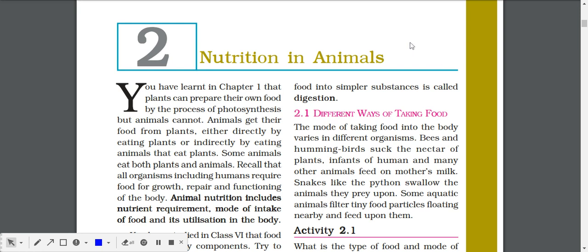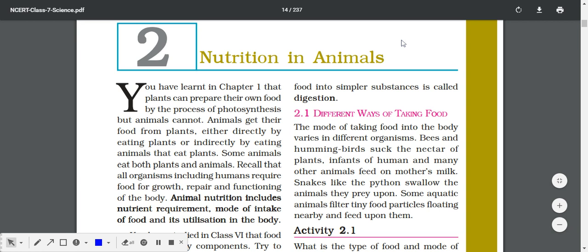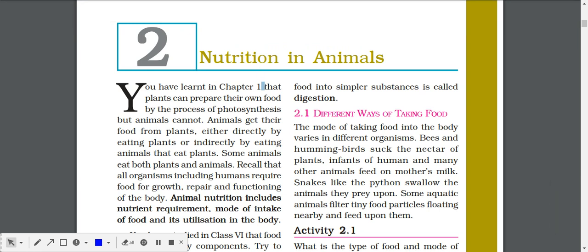Good morning everyone. Today we are going to study chapter number two of class 7th science: Nutrition in Animals. In chapter one, we learned about various plants and animals as well as processes like photosynthesis and how plants make their own food. Now in this chapter we will study how animals take up nutrition.